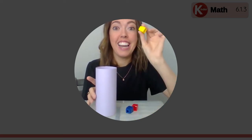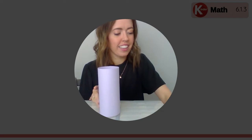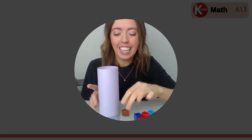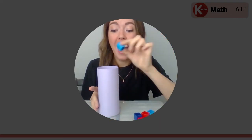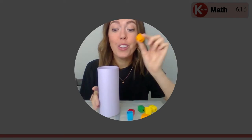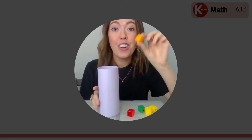Fifteen, sixteen, seventeen, eighteen, nineteen, twenty. We're about right here. Twenty-one, twenty-two, twenty-three, twenty-four, twenty-five, twenty-six, twenty-seven, twenty-eight, twenty-nine, thirty. Wow, this is a lot of cubes to fit in this cylinder.